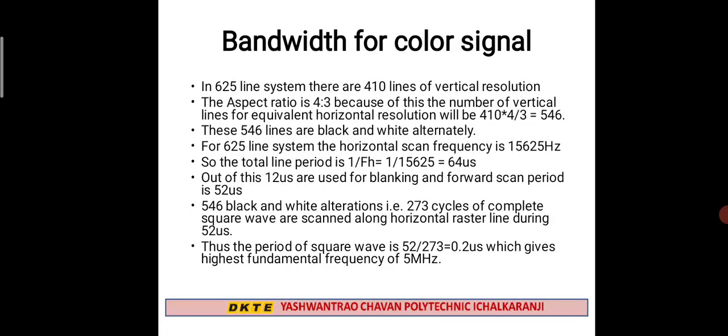Using 420 alternate black and white picture elements, the period is 52 divided by 273, which equals approximately 0.2 microseconds. This corresponds to a frequency of 5 MHz. Therefore, the bandwidth for the color signal is 5 MHz.